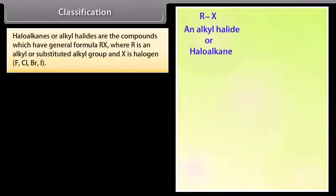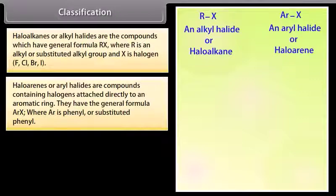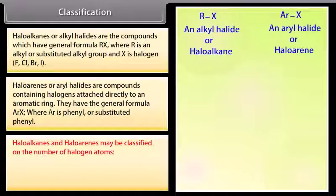Haloalkanes or alkyl halides are compounds which have the general formula RX, where R is an alkyl or substituted alkyl group and X is the halogen: F, Cl, Br, or I. Haloarenes or aryl halides are compounds containing halogens attached directly to an aromatic ring, with the general formula RX where R is phenyl or substituted phenyl.